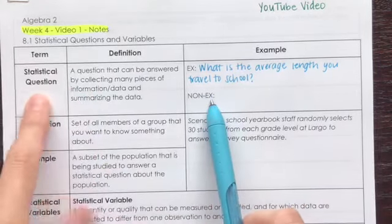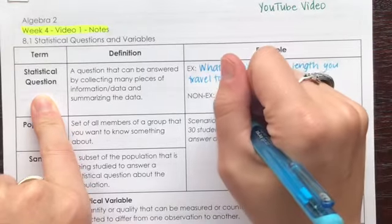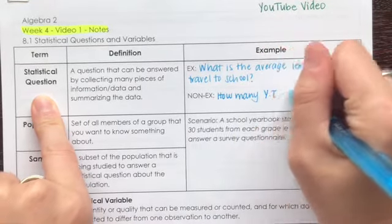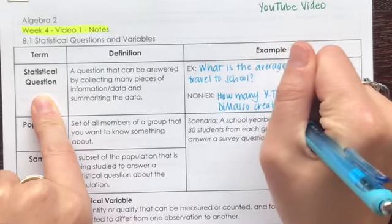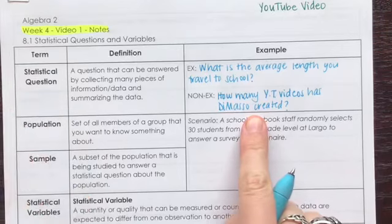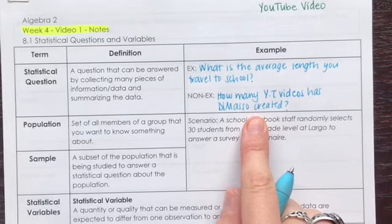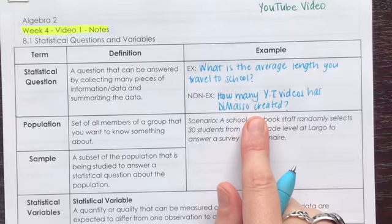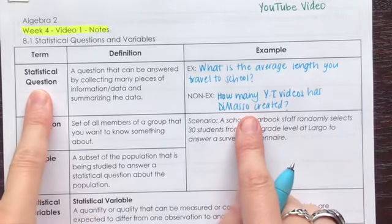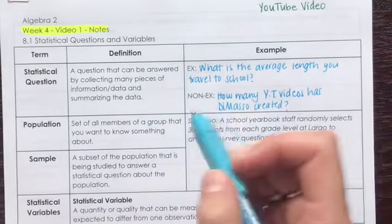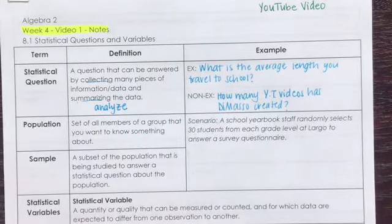A question that is not a statistical question would be something like: how many YouTube videos has Mr. Masso created? The reason that is not a statistical question is because I would just have to figure out how many videos I've made. I've made about 35 videos — that just has one answer. I'm not collecting data, I'm not analyzing it and trying to come up with a summary. It has just one answer, so it is not considered a statistical question. It needs to have some way for me to collect and then summarize or analyze my data.